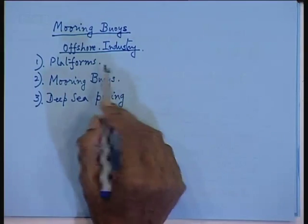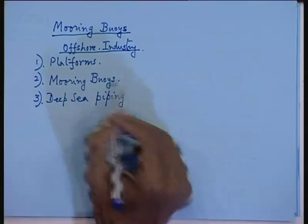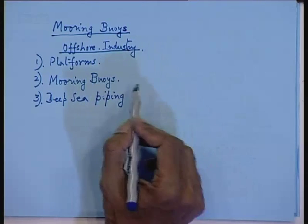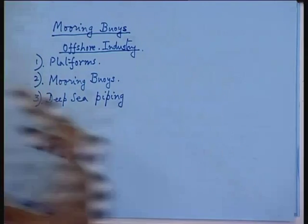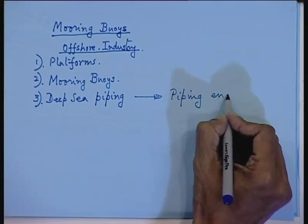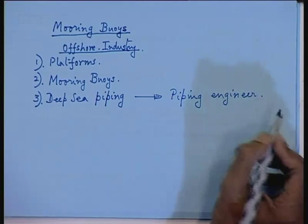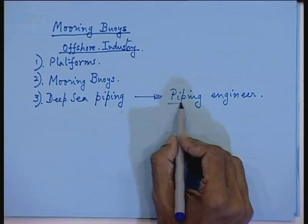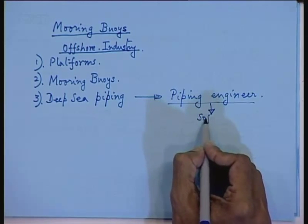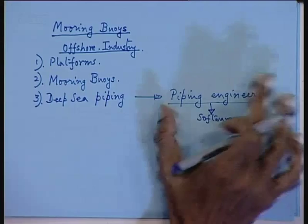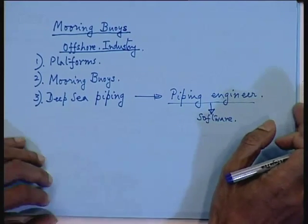Coming to deep-sea piping: piping design is very complicated. First you have to design the structural arrangement, and then there is flow and other considerations — this is the specialized job of a piping engineer. Most shipyards have a piping engineer who is a specialized person dealing with all the piping. Nowadays software support is also available for piping design. This is a well-developed and specialized branch of study.